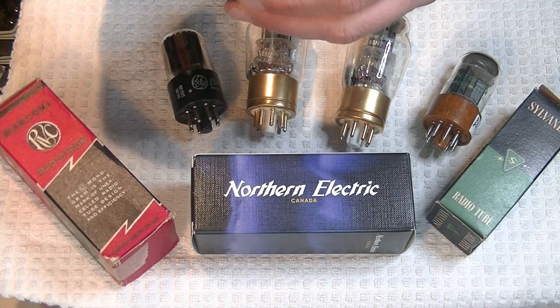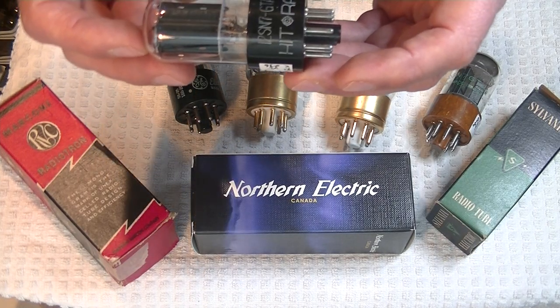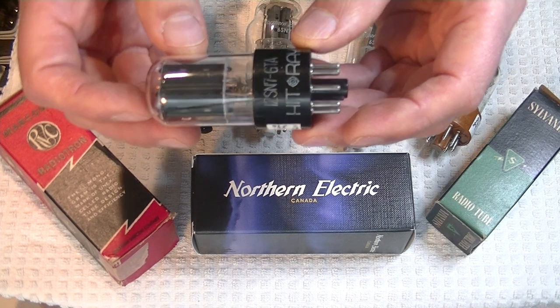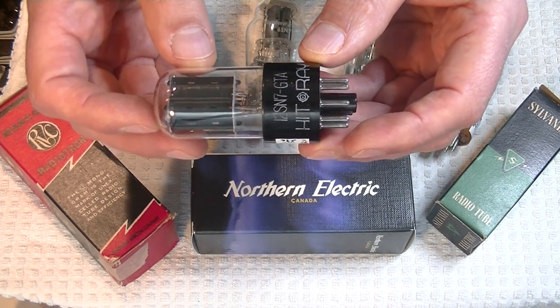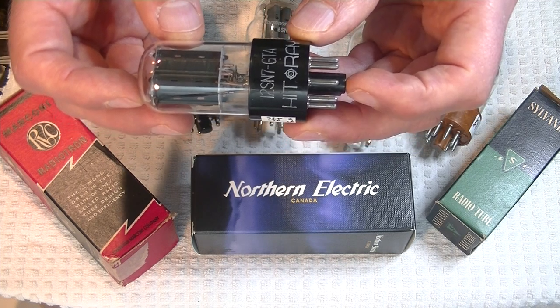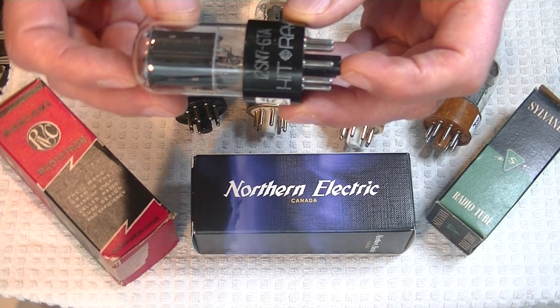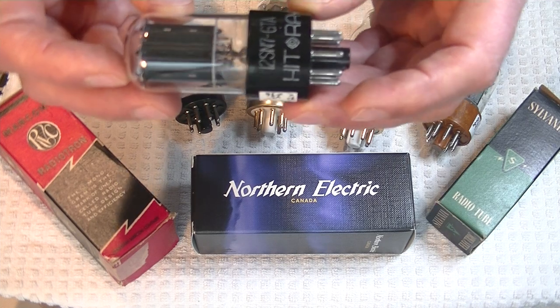Up first is my HitRae 12 SN7 GTA. Now, HitRae was a joint venture company formed by Hitachi of Japan and Raytheon of the USA, with, I believe, all the tubes made in Japan. Let's have a quick look at it.